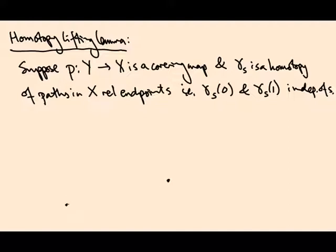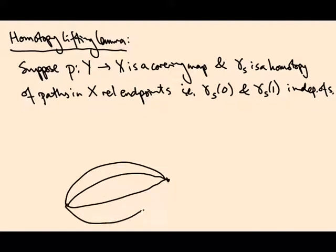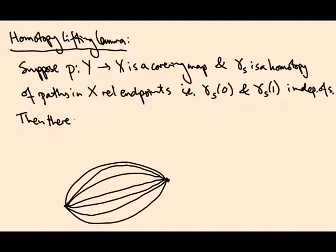So the picture is you've got these two points and you've got a bunch of paths between them that form a 1-parameter family. Well, the claim is then there exists for each lift gamma tilde 0 of gamma 0, a lifted homotopy gamma tilde s of gamma tilde 0.